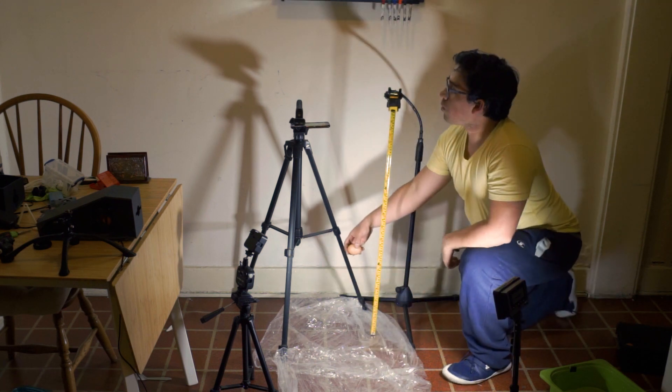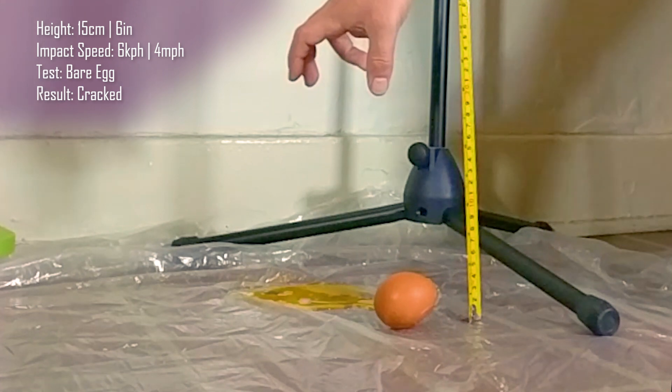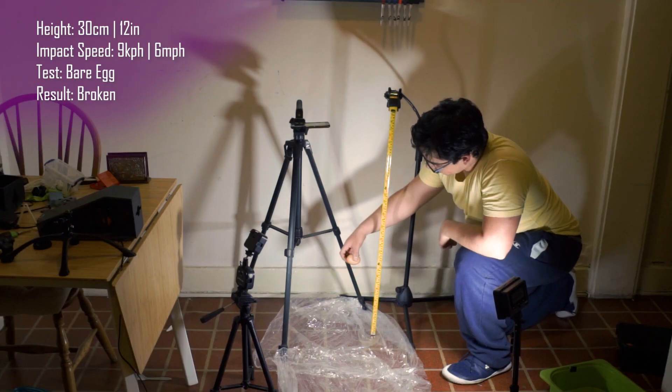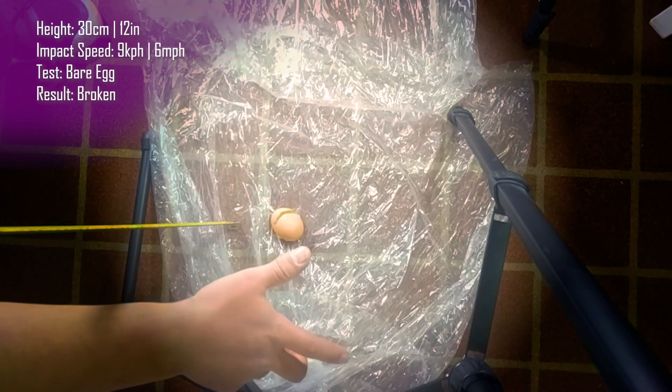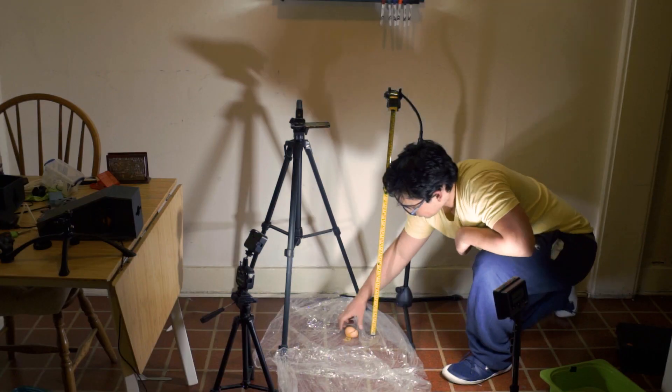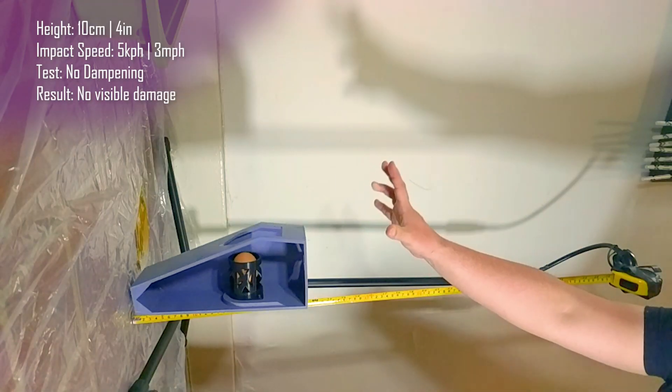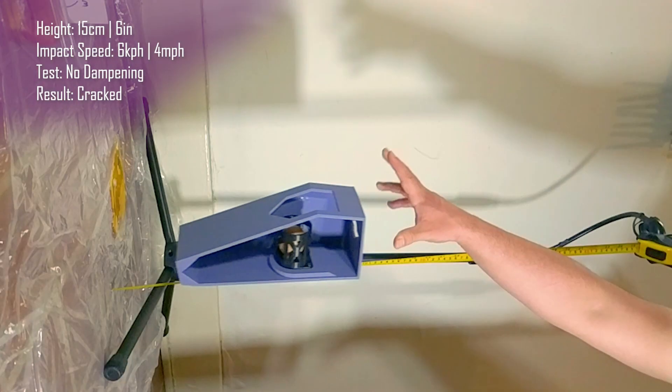My goal was to find the point where the eggs would break consistently. I started with just eggs by themselves and I found that they start cracking at a 10 centimeter drop, but they didn't break all the way until I dropped them from 30 centimeters.